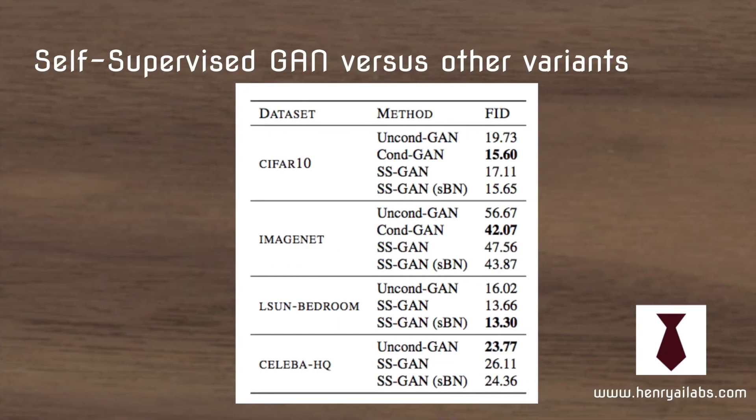This plot shows how the self-supervised GAN model proposed here is able to align itself with the conditional GAN, which is really impressive because the conditional GAN requires labeled datasets, whereas the self-supervised GAN is completely unsupervised.